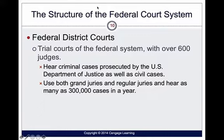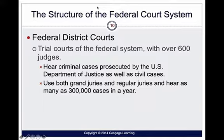Federal courts use grand juries and regular juries. A grand jury is used to bring an indictment against a person — basic citizens who come together and decide whether or not to press charges. Regular juries listen to a case and make a decision, either on the criminal or civil side. On the civil side, if you have a disagreement, per the Seventh Amendment, you can sue somebody.